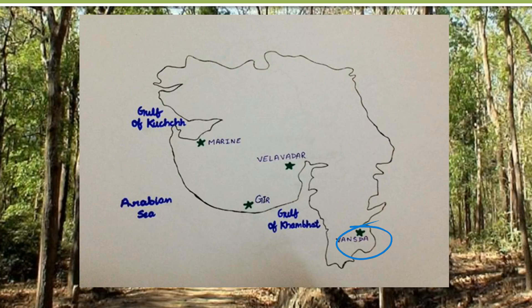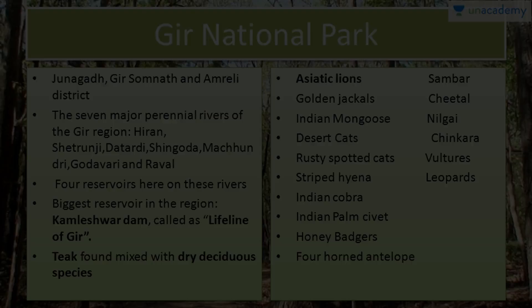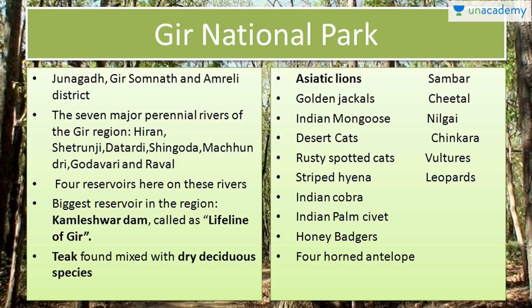First is Gir National Park. It is surrounded by Junagadh, Amreli and Somnath districts and in this region seven major perennial rivers flow. Perennial rivers are those which flow throughout the year. These are Hiran, Shatrunji, Datardi, Shingoda, Machundari, Godavari and Rawal. Four reservoirs are built on rivers Hiran, Shingoda, Machundari and Rawal. The biggest one is Kamleshwar Dam, also known as Lifeline of Gir. You will find here Teak Forest as the region has semi-arid and dry conditions with dry deciduous forests.